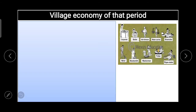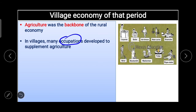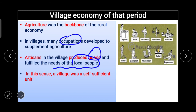Agriculture was the backbone of the rural economy. In villages, many occupations developed to supplement agriculture — artisans produced goods and fulfilled the needs of local people. These artisans included carpenters, barbers, idol dressers, water carriers, shoemakers, blacksmiths, washermen, potters, and rope makers. In this sense, a village was a self-sufficient unit.